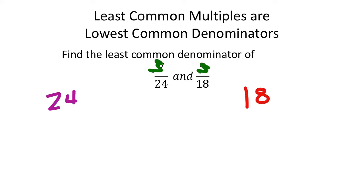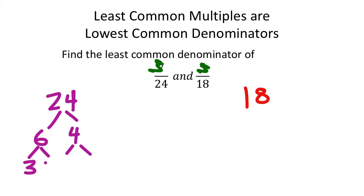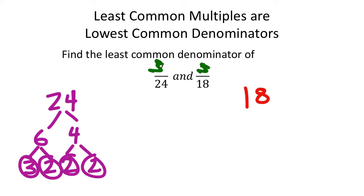Let's use prime factorization for 24 and 18. For 24: split into 6 and 4; 6 splits into 3 and 2, and 4 splits into 2 and 2. So 24 = 3 × 2 × 2 × 2.